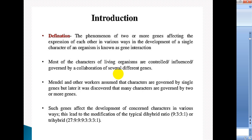Earlier, Mendel proposed that a single gene is responsible for a single character, for which Mendel's Laws are not fully accepted nowadays. For example, the Law of Independent Assortment, where the F2 phenotypic ratio was 9:3:3:1 in a dihybrid cross, does not hold good in all cases.